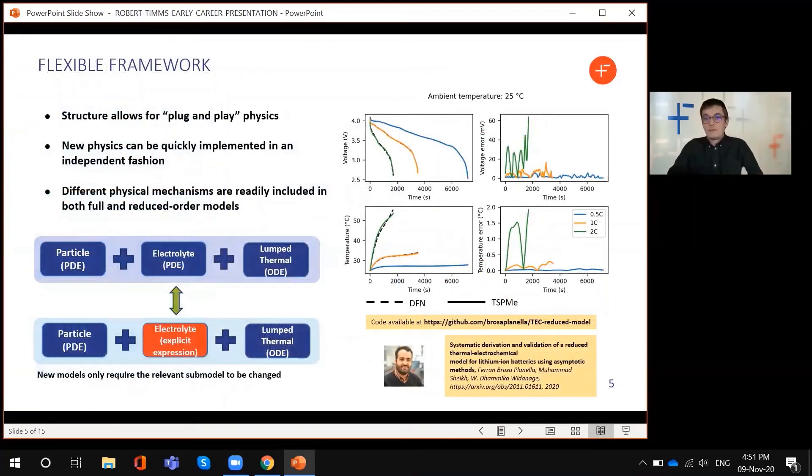The flexibility of PyBAMM continues down to the description of the models. All of the models in PyBAMM are written down as a collection of sub models, and this is what gives you this option to have plug and play physics. One example of this is some work done recently by Ferran Brosa Planella at Warwick. He's got a recent paper on arXiv, the link for it is down there in the yellow box, deriving a particular variant of the single particle model.